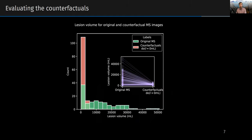Evaluating counterfactuals is difficult because we necessarily don't have ground truth to compare against. But to quantitatively assess our counterfactuals, we took 124 MRIs of people with MS, passed them through a lesion segmentation network, and measured the segmented lesion volume. Then we created corresponding counterfactual image volumes where the lesion volume was set to zero and passed those images through the network. As shown in the plot, the segmented lesion volumes for the counterfactuals drop to zero as expected.